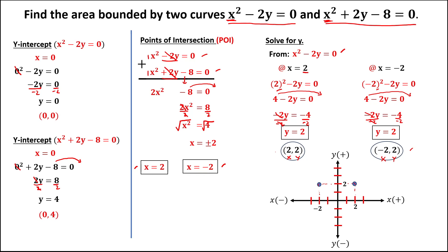To determine the opening of each curve: from x squared minus 2y equals 0, since the y-intercept is (0, 0), this curve opens upward. The second curve, x squared plus 2y minus 8 equals 0, has its y-intercept at (0, 4).